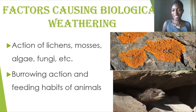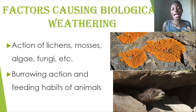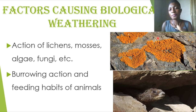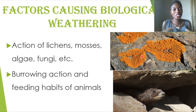Lichens and mosses which grow on top of rocks also cause biological weathering. Lichens refer to a symbiotic association between a fungus and an alga — the alga provides food and the fungus provides protection, a mutualistic symbiosis. As they live on rocks, lichens take certain minerals from the rock for nourishment, causing disintegration of the rock in the process.